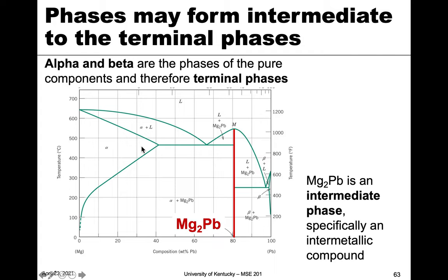This is an example of that — alpha and beta are the terminal phases, and Mg₂Pb is the intermediate phase. This one is specifically what we call an intermetallic; it has a specific stoichiometry. You can see from the fact that it's a line that it really only exists as a pure component at this very specific composition. In terms of weight percent, that's a little over 80 — I'm going to guess it's 66 based on the stoichiometry, right? This is two thirds, and this is one third.